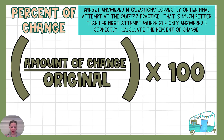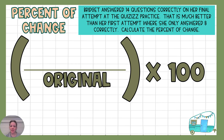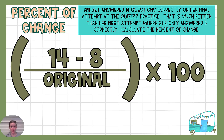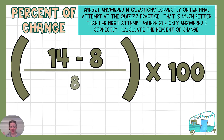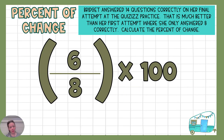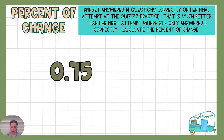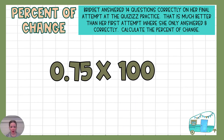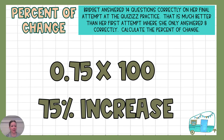Let's take a look at Bridget and how she did on her quizzes. She answered 14 questions correct on her final attempt, which is much better than her first attempt where she only answered 8. Calculate the percent of change. The difference is between 14 and 8, and we divide that by the original — her first attempt, which is 8. 14 minus 8 is 6. We do 6 divided by 8, which is 0.75. Multiply that by 100 and that means she increased 75%.